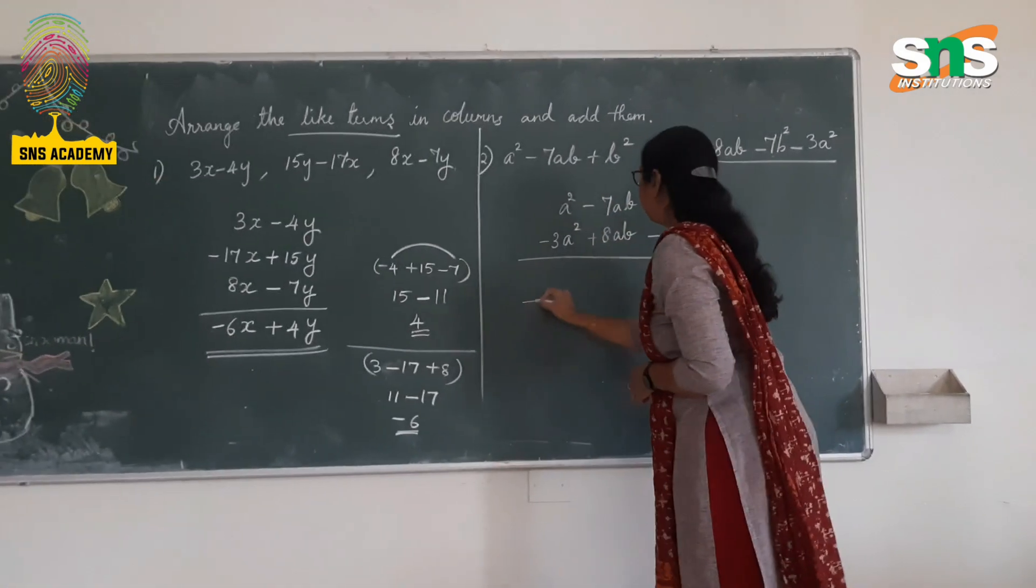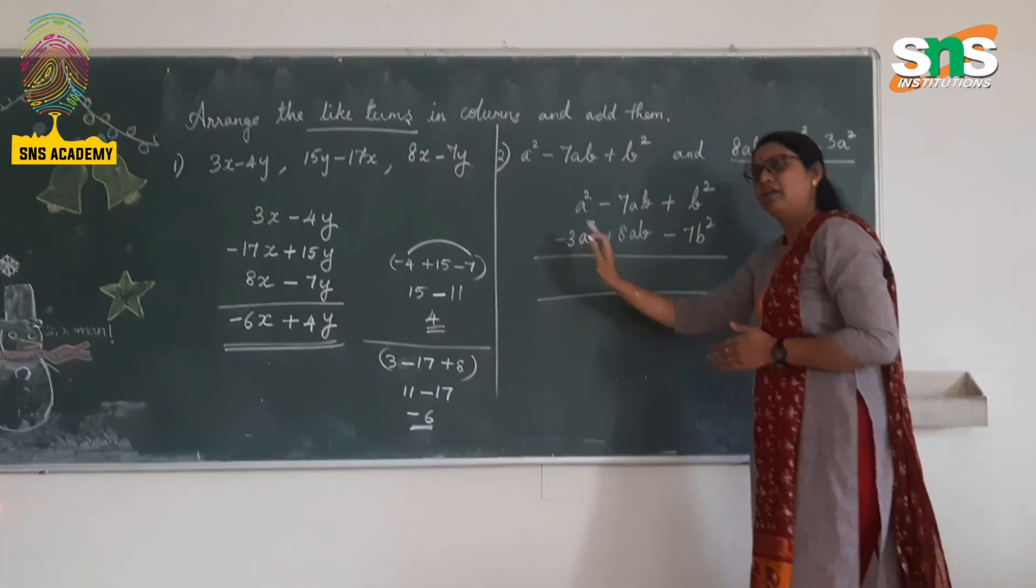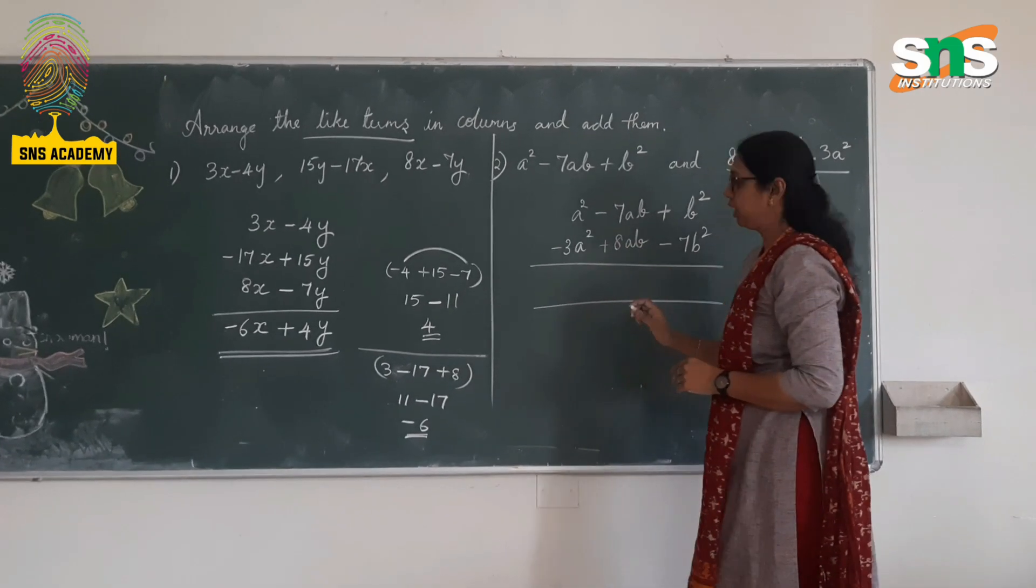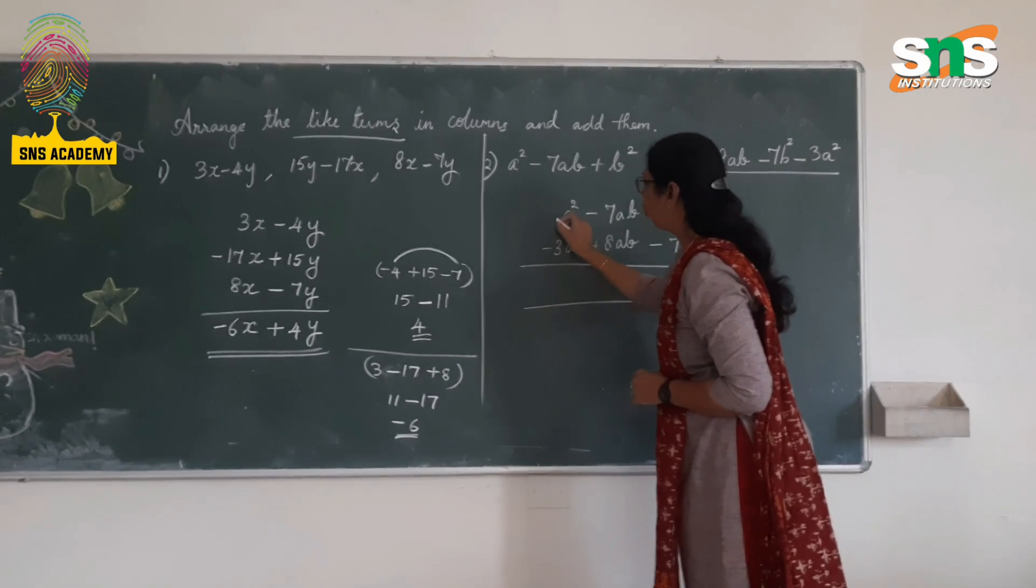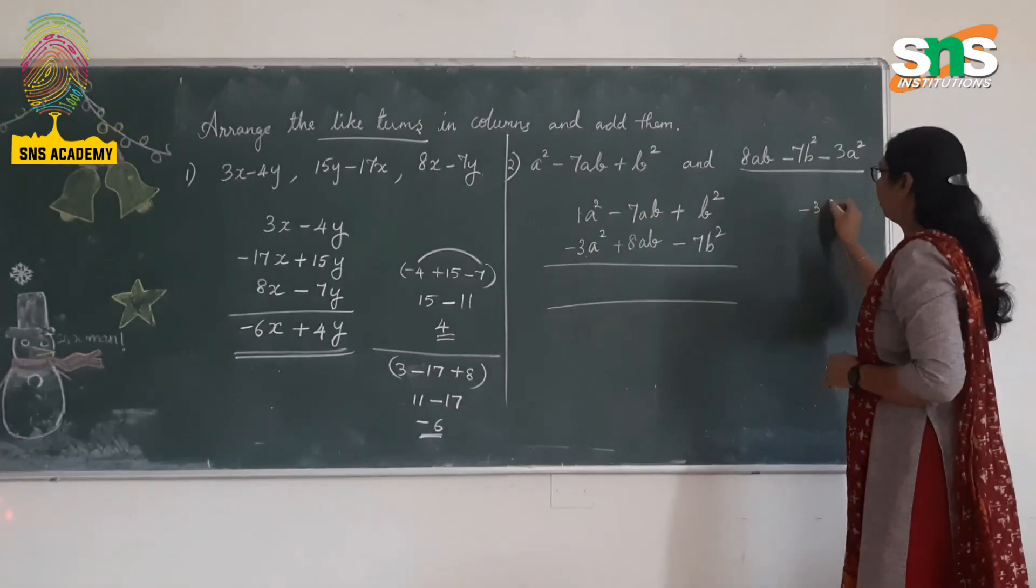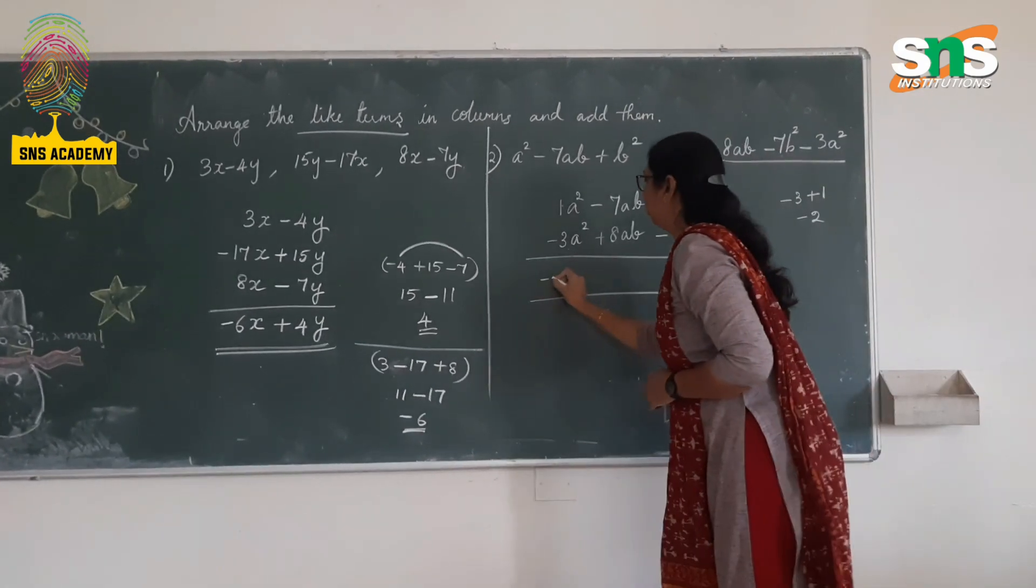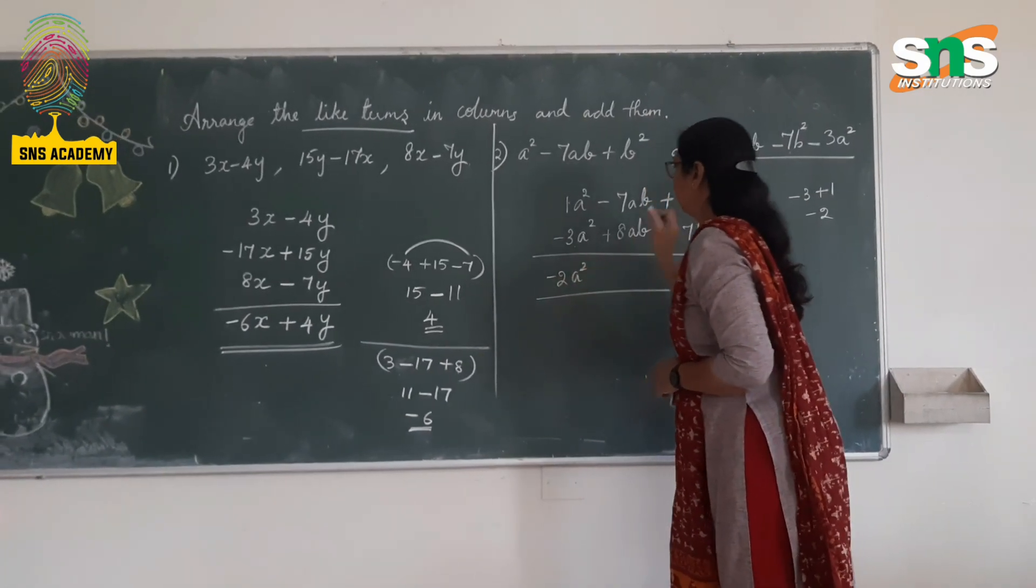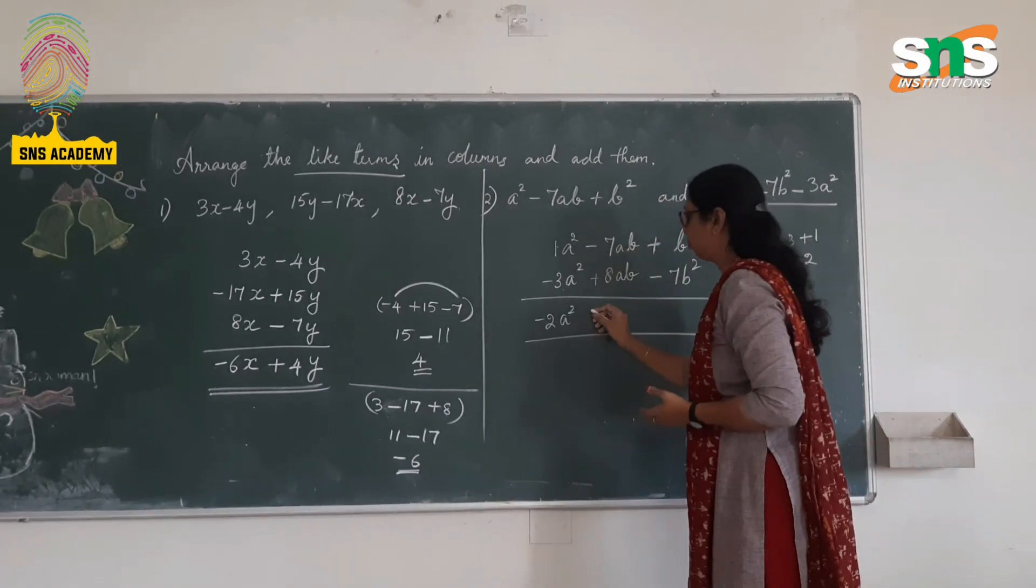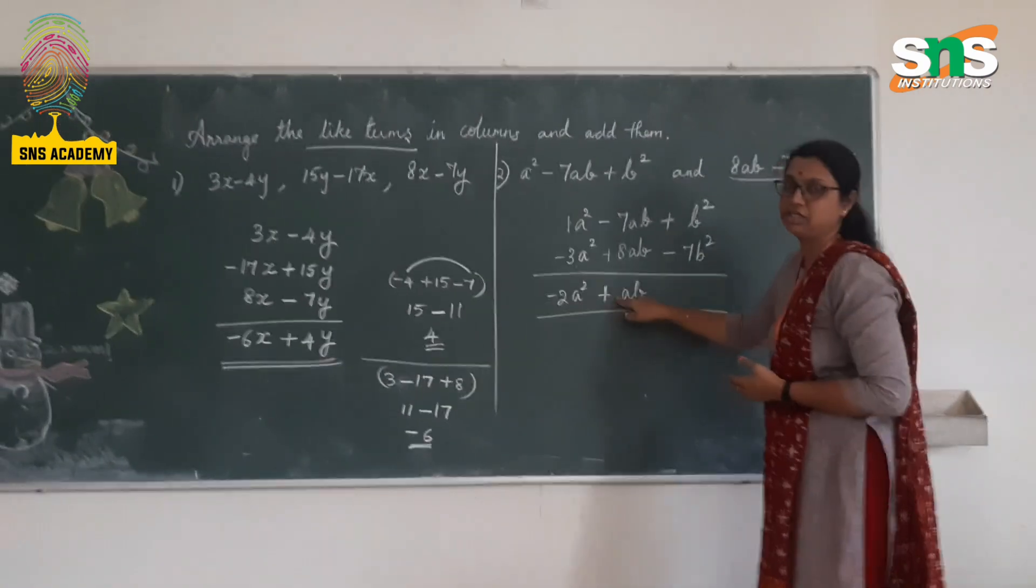Now we have arranged them as like terms in columns. First, we will check for, we can add from left to right or right to left. Here, we will check for a². So the coefficient of a² is going to be 1. So -3 positive 1. -3 positive 1. It is different sign, subtract with the greater and the sign. So -2a². Next, +8 -7. So we know that 8 - 7 is 1. So plus ab. Since it is 1, I am not writing that positive 1.